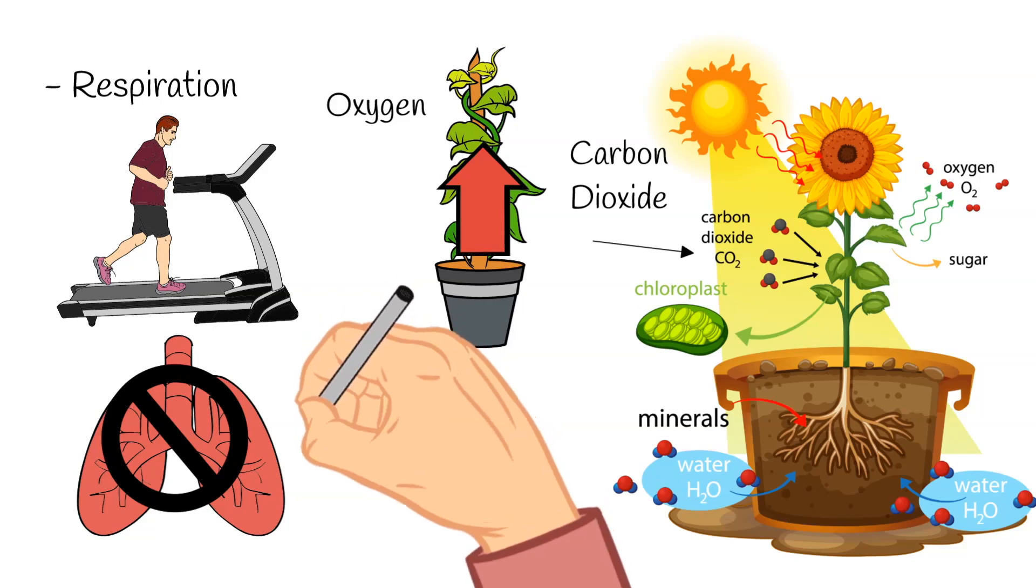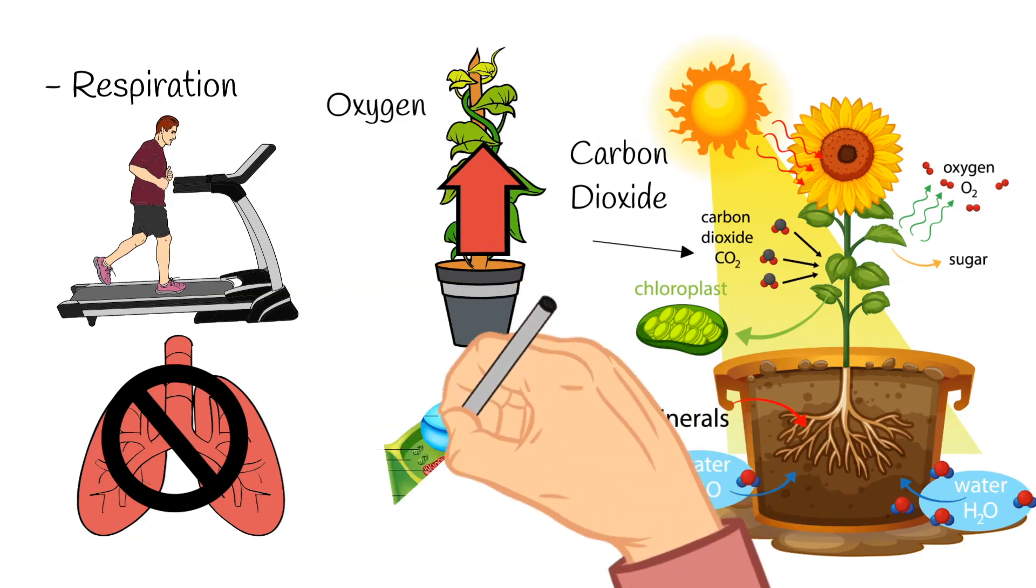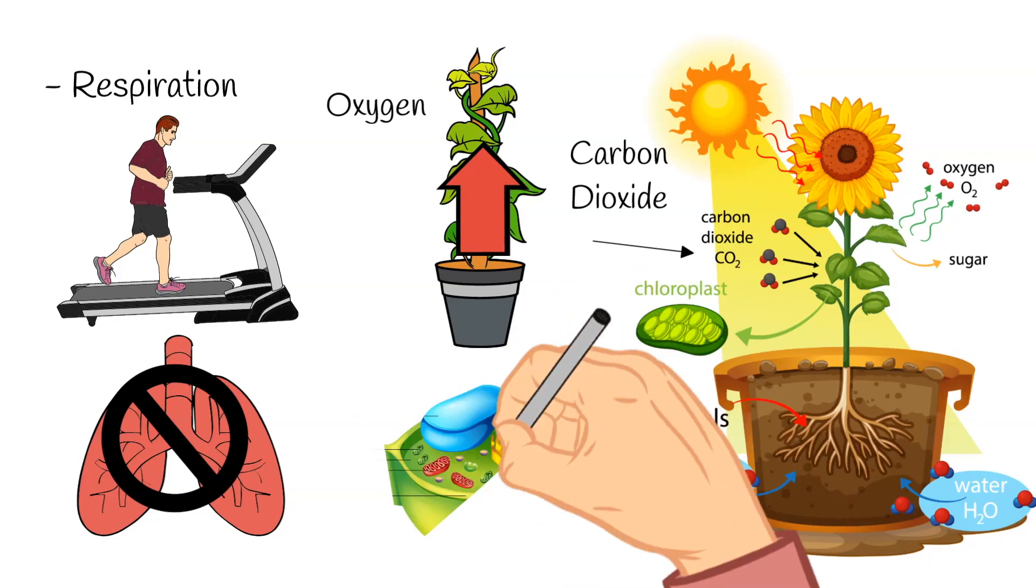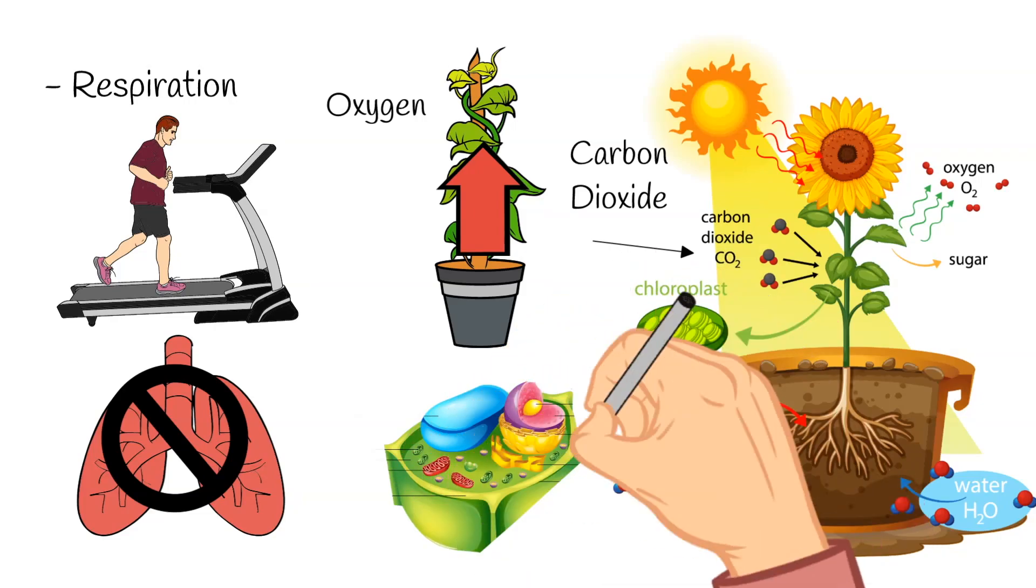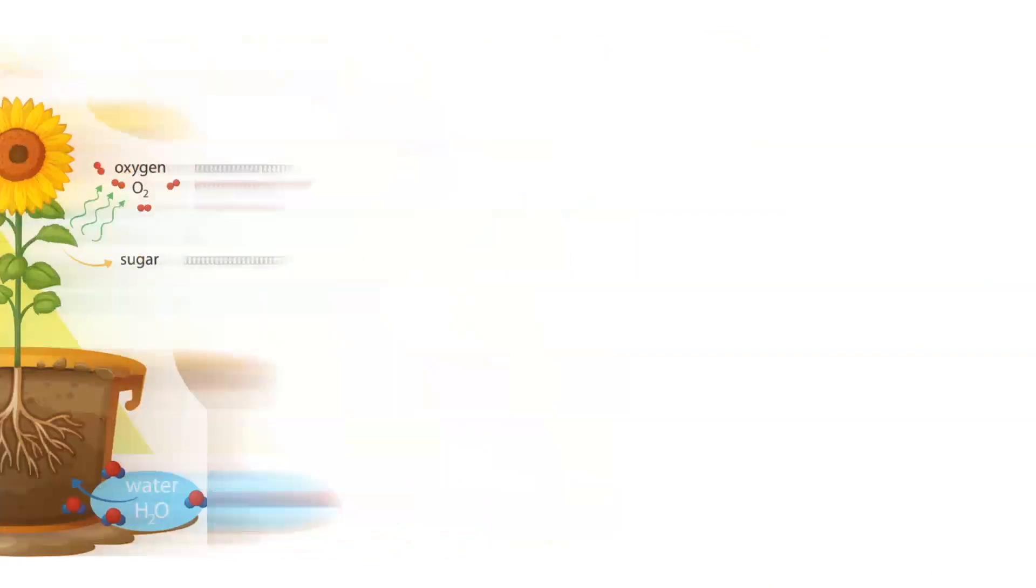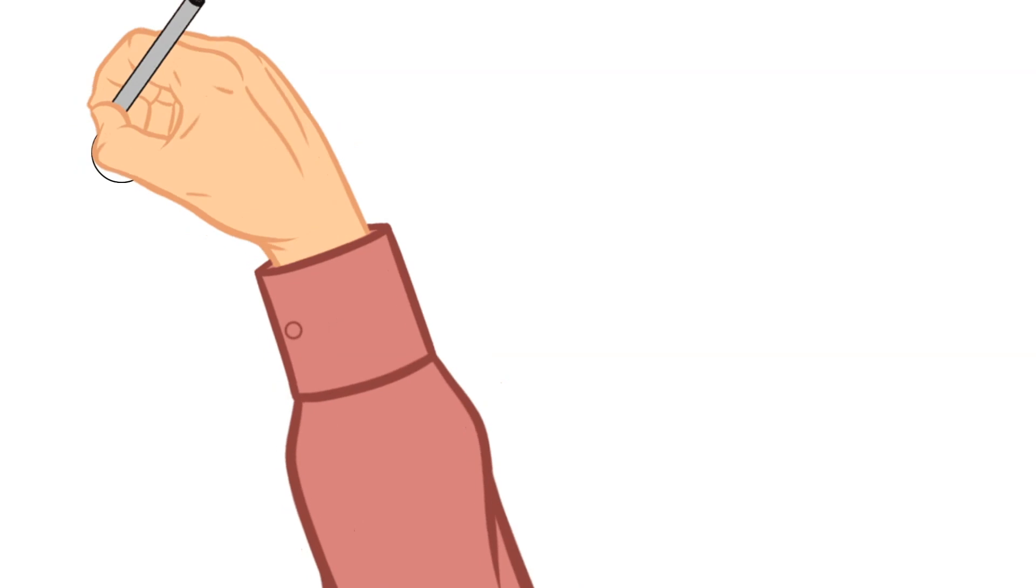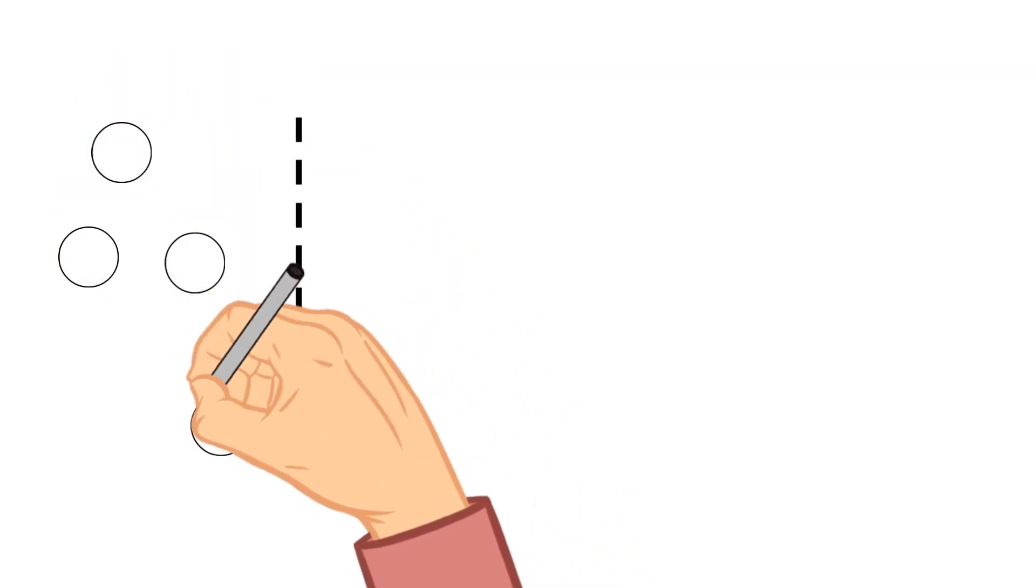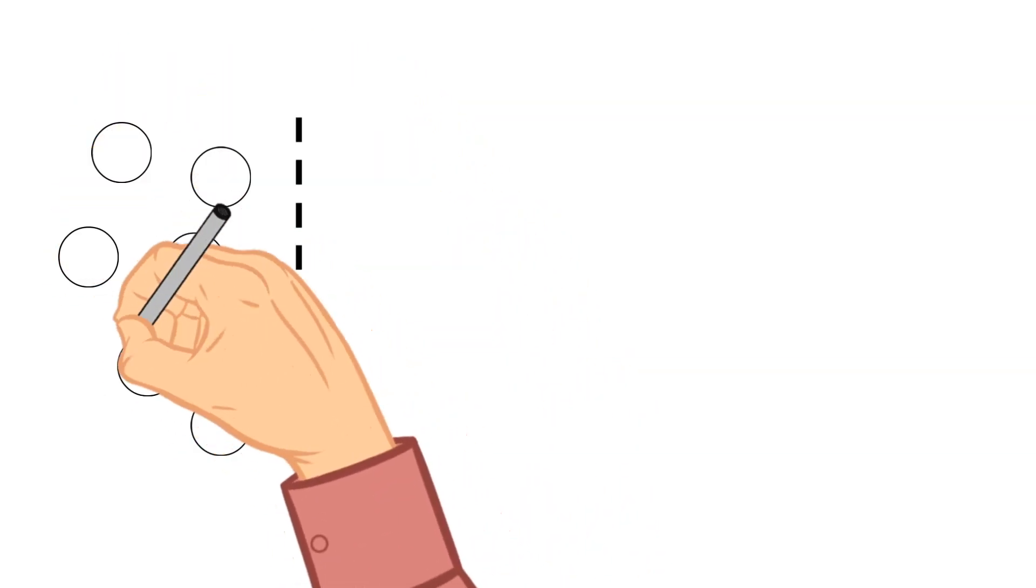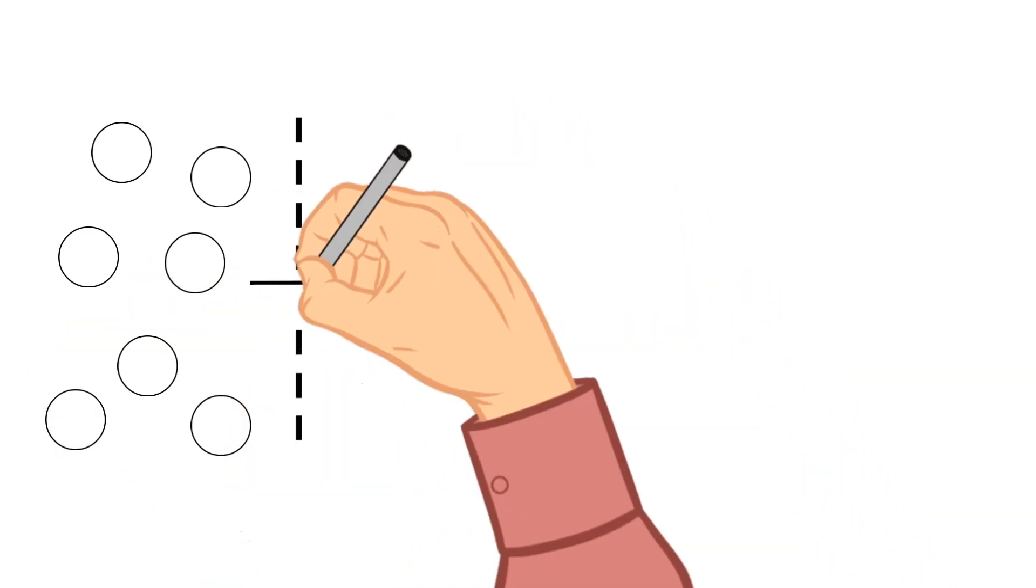Well, they have in their tissues loosely packed cells with large air spaces that allows for the easy exchange and the movement of these gases. Now, it is important to know gases tend to move from an area of high concentration to an area of low concentration. And this process is called diffusion.